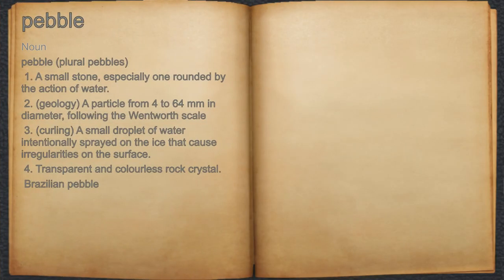Pebble. Noun. 1. A small stone, especially one rounded by the action of water.